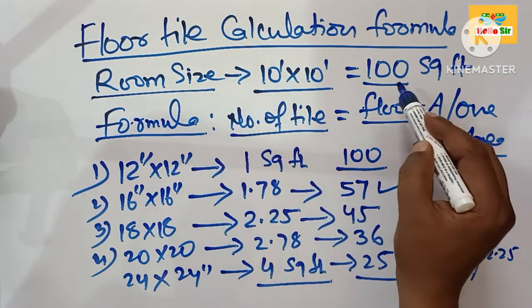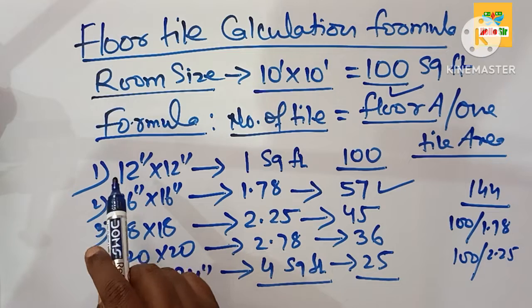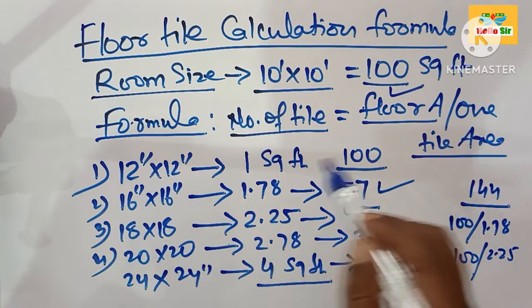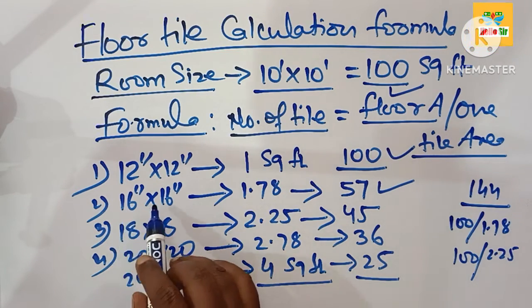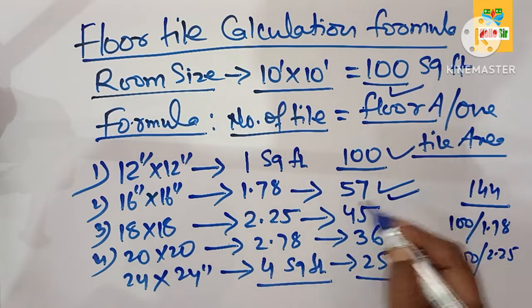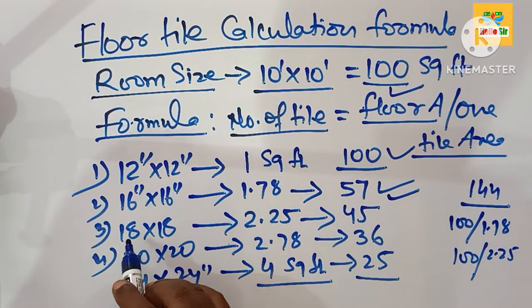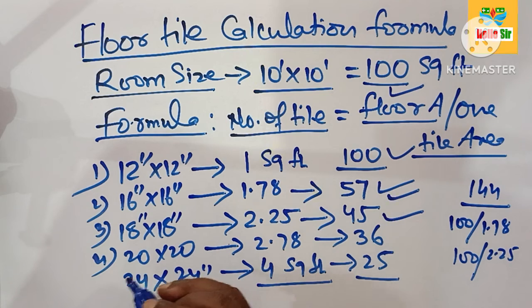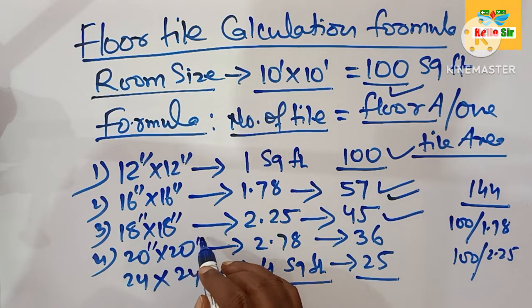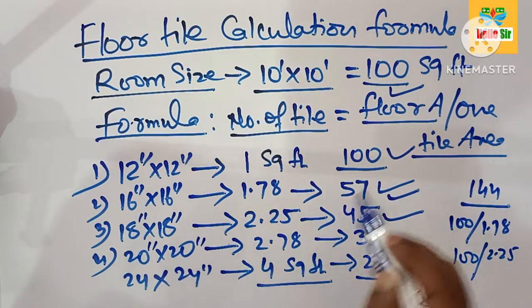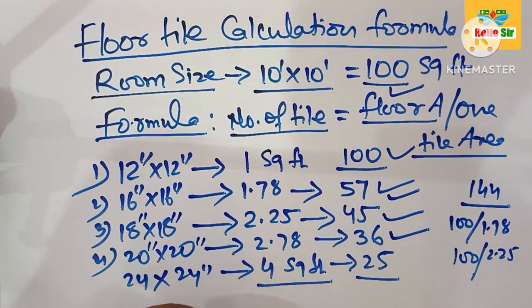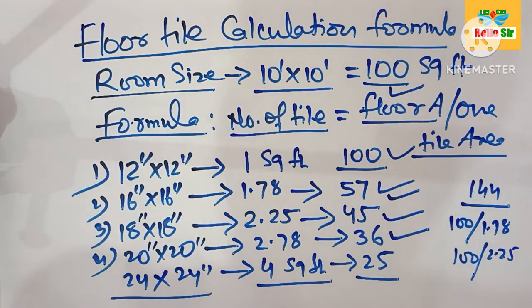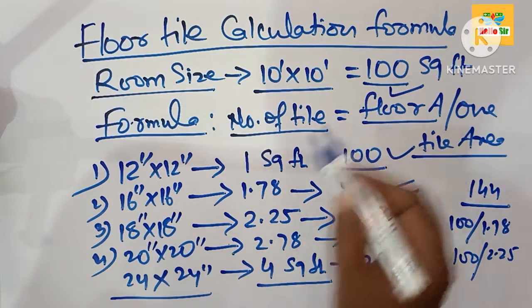To summarize: to cover a 100 square foot area, you need 100 tiles if using 12x12 inch tiles, 57 tiles if using 16x16 inch tiles, 45 tiles if using 18x18 inch tiles, 36 tiles if using 20x20 inch tiles, and 25 tiles if using 24x24 inch tiles.